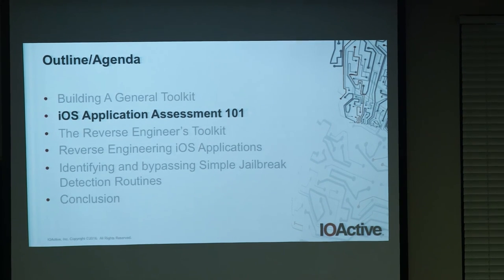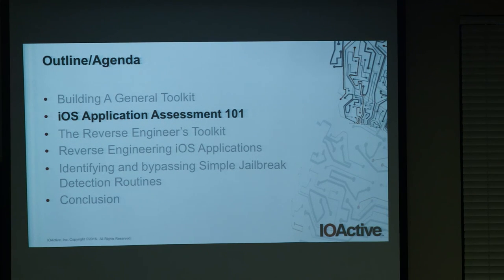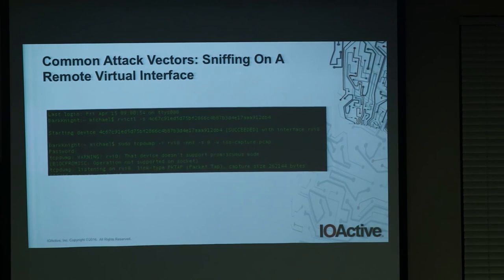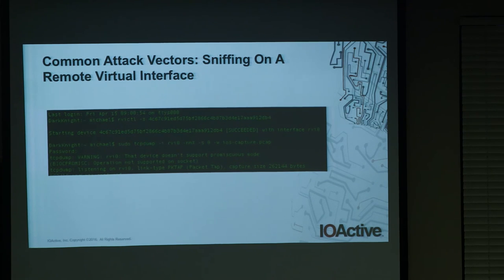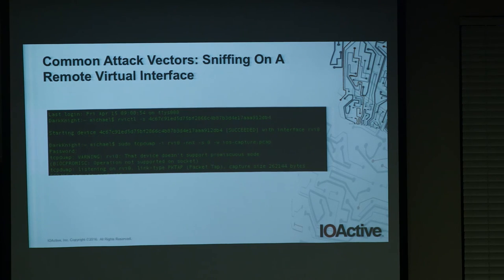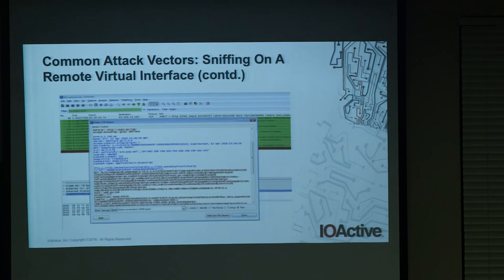That's the general toolkit. The usual tests performed relate to insecure storage. Applications communicate with a backend server over HTTP or HTTPS, and you'd use Burp Suite to intercept that traffic. You can also create a remote virtual interface using 'rvictl': plug your device into iTunes, note the UDID, issue 'rvictl -s [UDID]' to bring up a virtual interface, then use tcpdump to sniff traffic through that interface, dump it to a PCAP file, and process it with Wireshark. This works on both jailbroken and non-jailbroken devices.